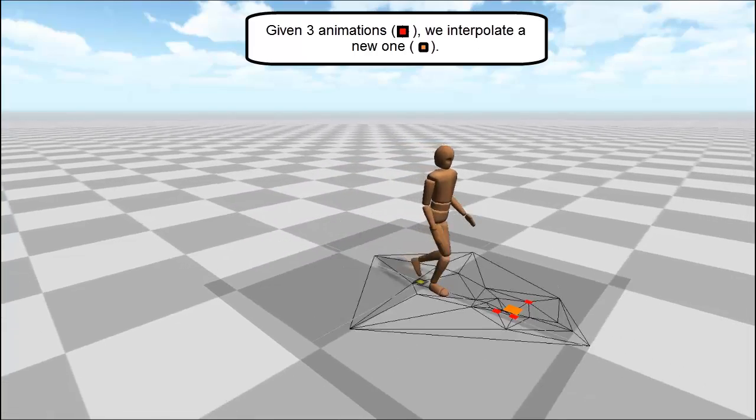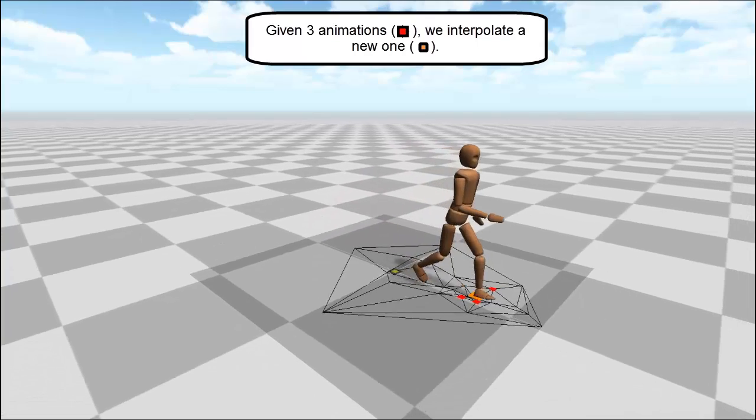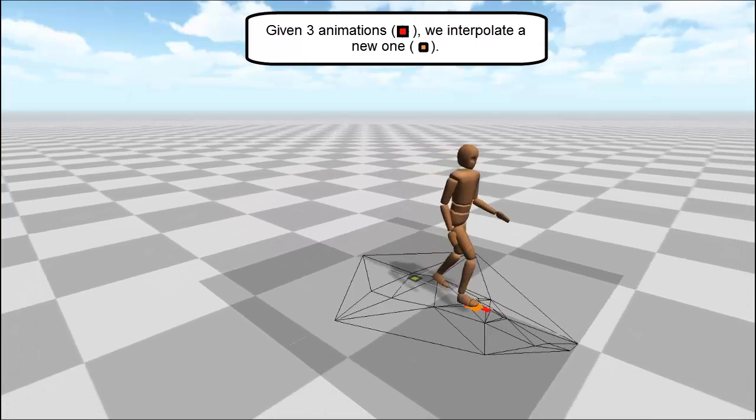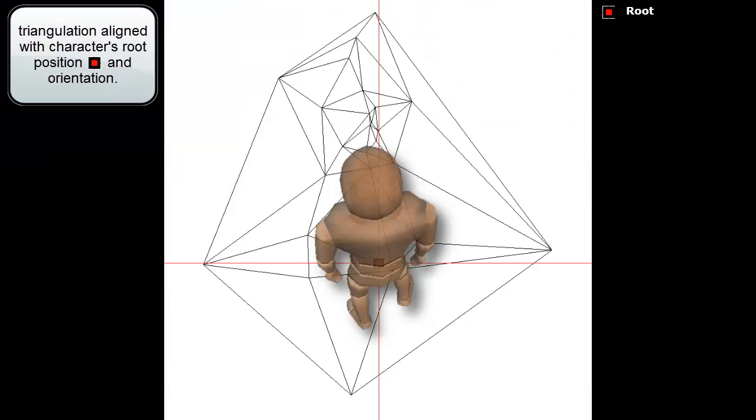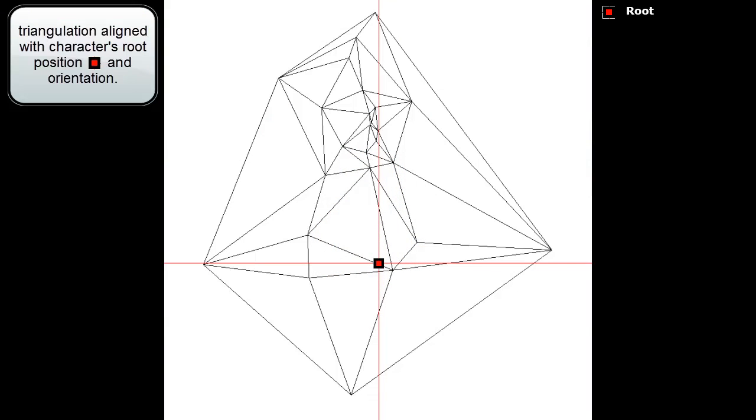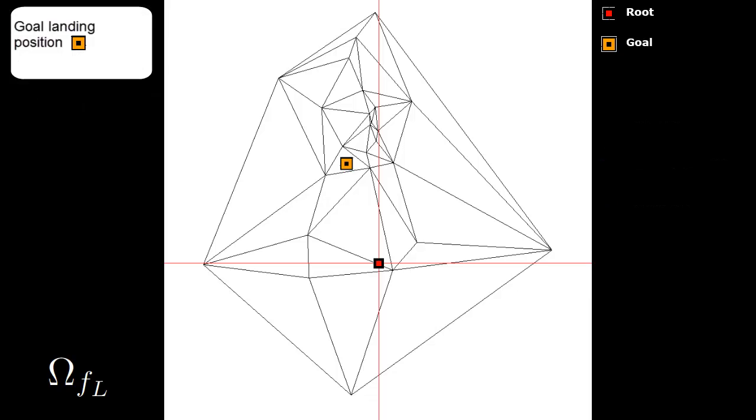The vertices of the triangle represent the landing positions for the three animation steps selected. We start by aligning the triangulation with the character's root position and orientation. Given a goal landing position, we calculate the barycentric coordinates of this point for the triangle containing it.